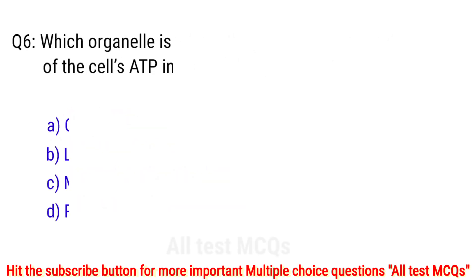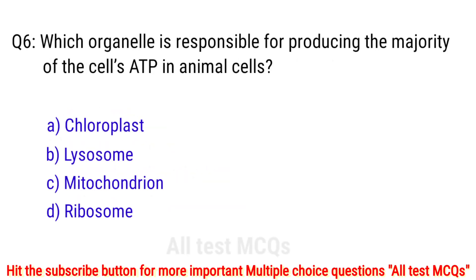Question number 6. Which organelle is responsible for producing the majority of the cell's ATP in animal cells? The right answer is option C: mitochondria.